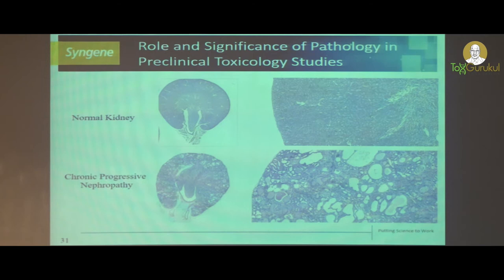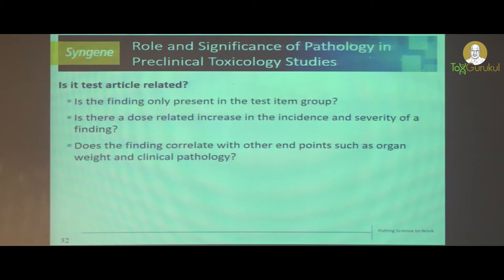Now you have ruled out the artifacts and the background findings. The next question is: is it test item-related? Test item-related findings generally occur in the test item-administered group only, though sometimes you may see incidence in control animals — in such cases compare with historical data to rule out whether it is background or test item-related. Importantly, test item-related findings always show a dose response: the severity and incidence increase over the dose. That is another important thing to keep in mind when identifying a test item-related finding.